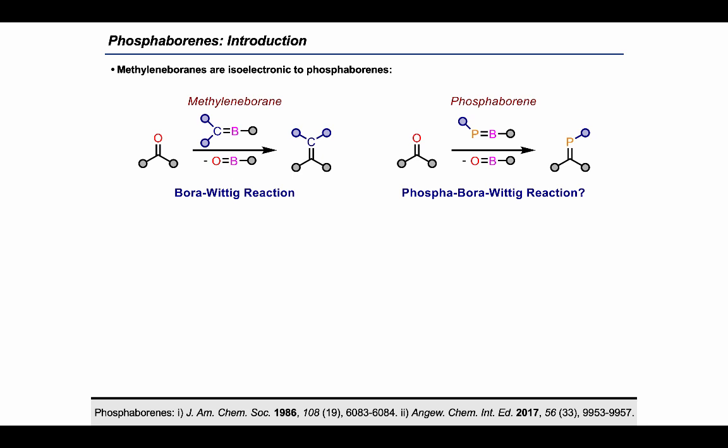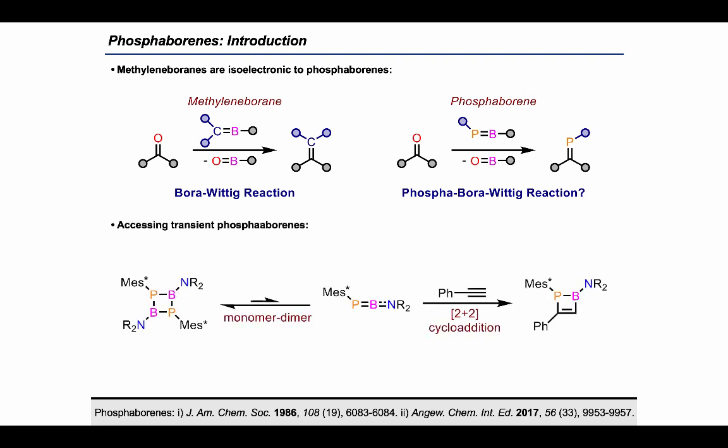Since phosphaboranes are isoelectronic to methylene boranes, we wondered whether these species could be directly used to prepare phosphoralkenes. Monomeric phosphaboranes however have yet to be isolated in the absence of a Lewis acid or Lewis base. Previous work in the Cowley group has demonstrated that transient phosphaboranes can be readily accessed and trapped by unsaturated organic molecules, giving us a platform to further explore the chemistry of these species.